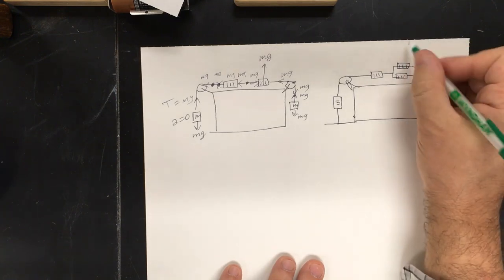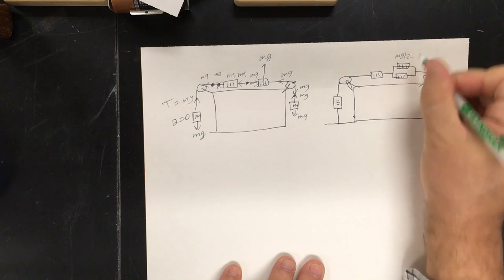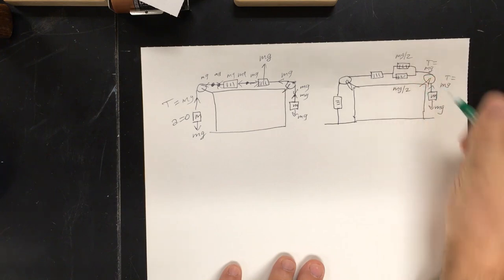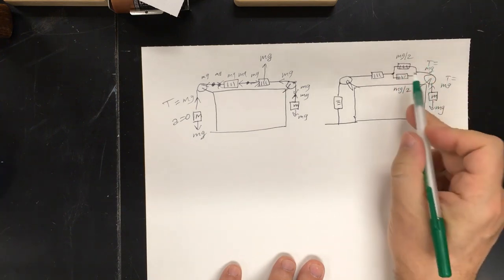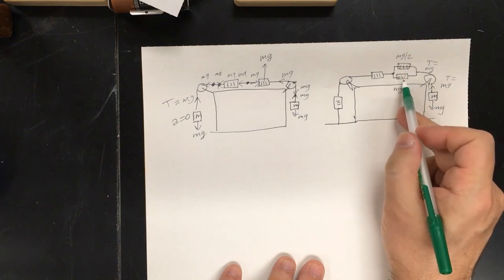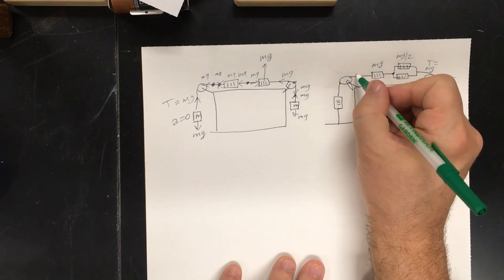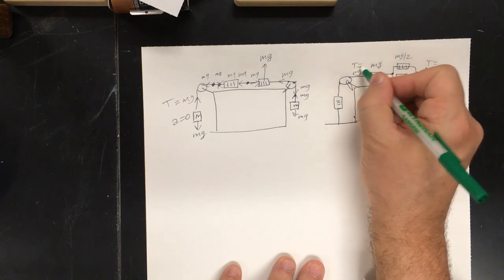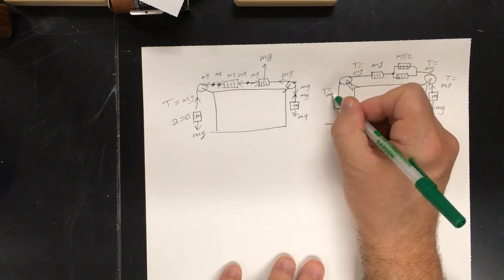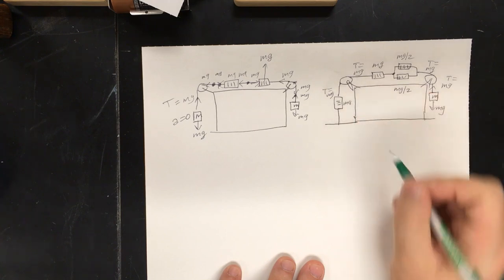Since it splits, this must be mg over 2, and mg over 2. This point right here, there is mg over 2, mg over 2, which equals mg, etc. This rope must be mg. This tension must equal mg, and this must read mg.